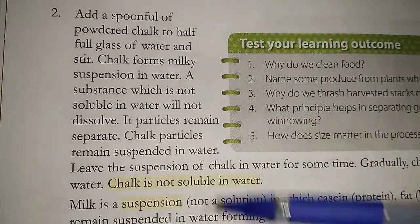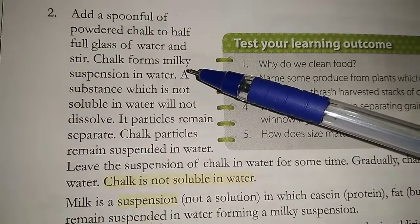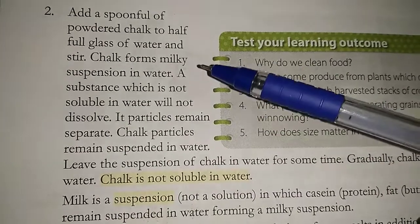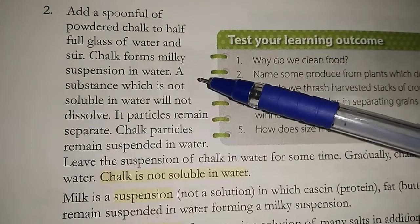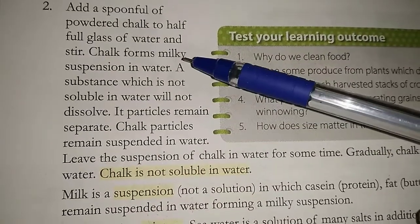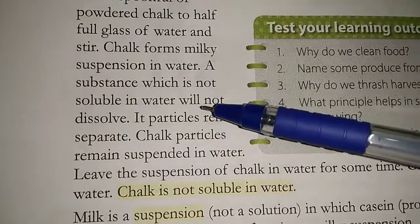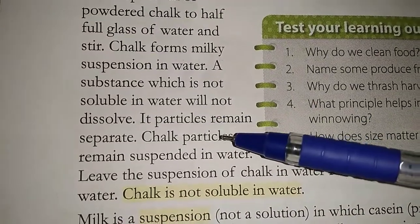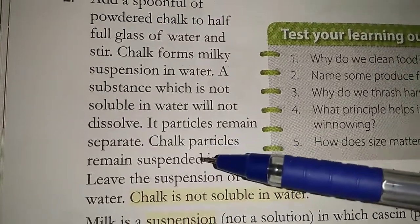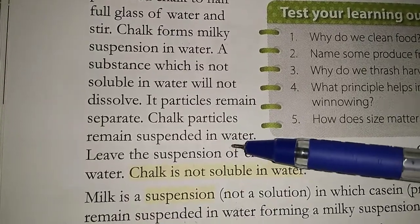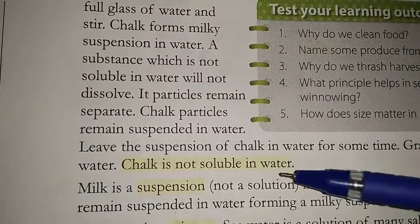Now let us understand insoluble substances. Add a spoonful of powdered chalk to half a glass of water and stir it. Chalk forms a milky suspension in water — a clear solution does not form; a suspension forms instead. A substance which is not soluble will not dissolve; its particles remain separate and are clearly visible. Chalk particles remain suspended in water and do not mix with the water.